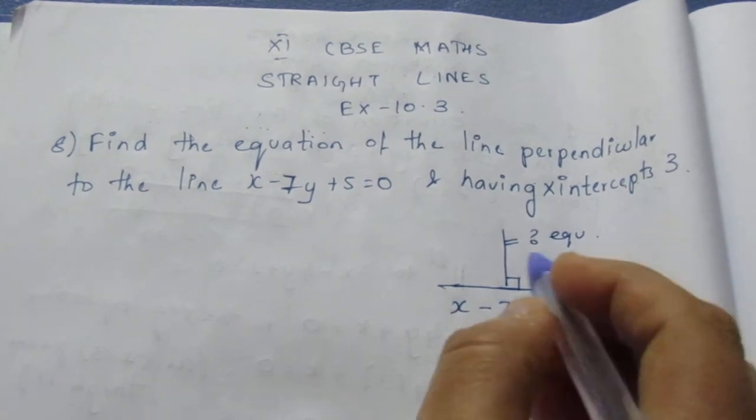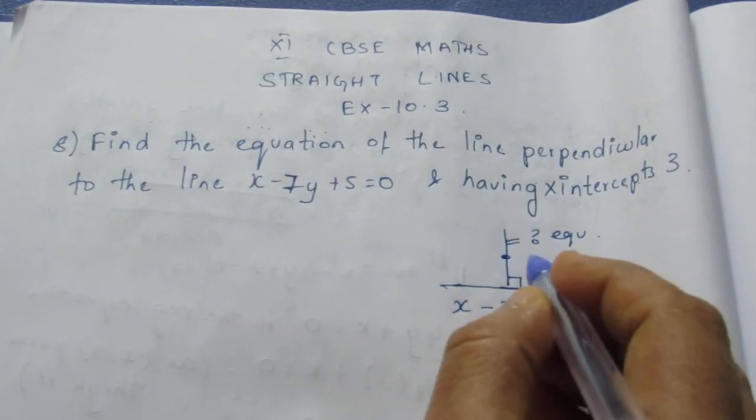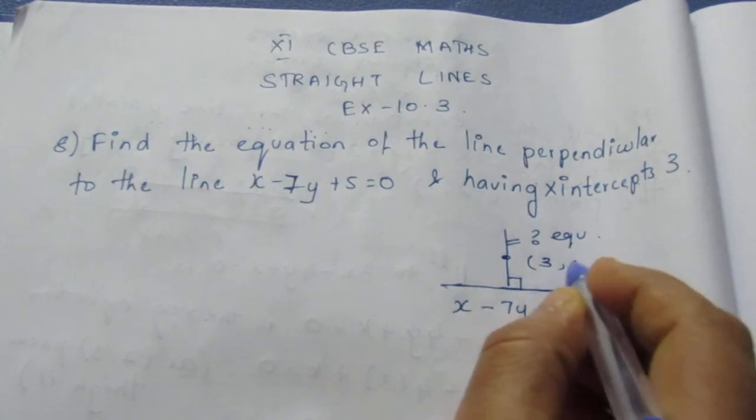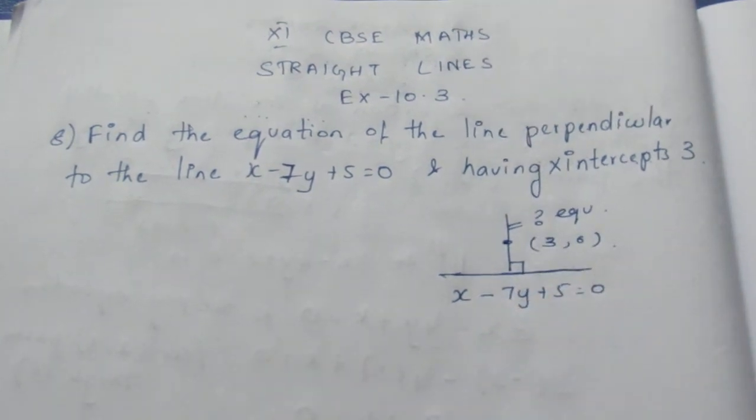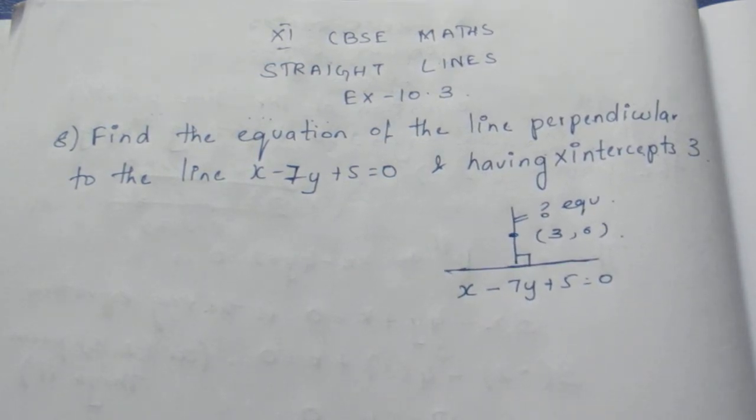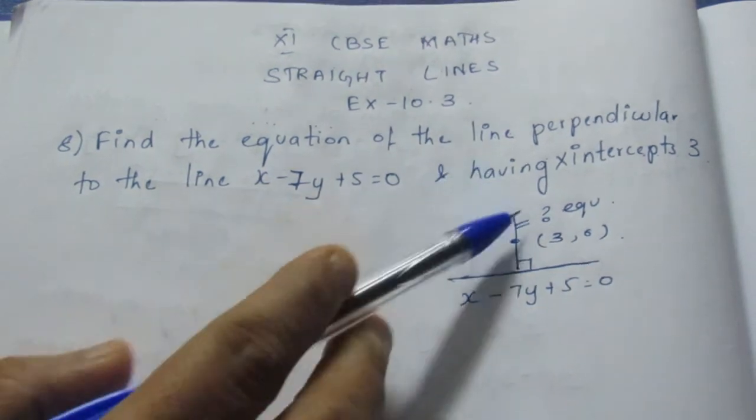Here they have given having x-intercept, that is the point here, one point whose x-intercept is 3, means it lies on the x-axis so there is no y value. The y value will be 0 for a point lying on the x-axis.